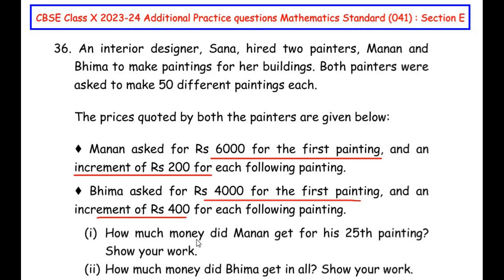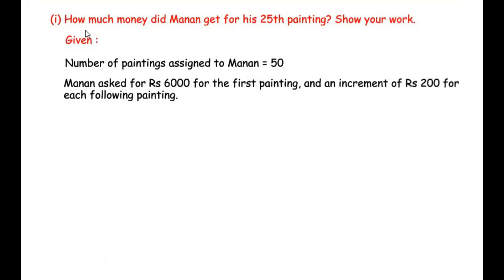The first sub question is: how much money did Manan get for his 25th painting? Show your work. The given information is: the number of paintings assigned to Manan is 50. Manan asked for Rs. 6000 for the first painting and an increment of 200 for each following painting.